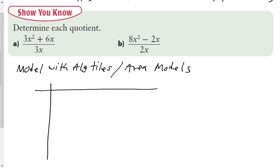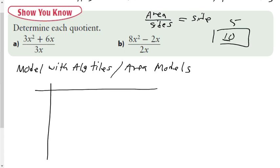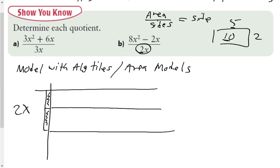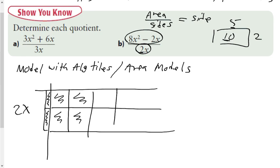Let's look at part b. The top number is our area, the bottom number is one of the sides, and the other is the missing side. Since 2x represents one of the sides, I draw it first — x and x gives me 2x. Then I draw straight lines across as a template for my area. In that area I have to create 8x² minus 2x, so: x², x², x², x², x², x², x², x² — that gives me 8x² inside.